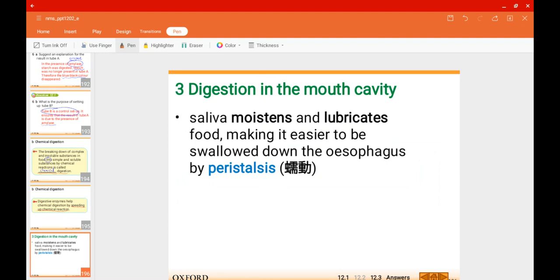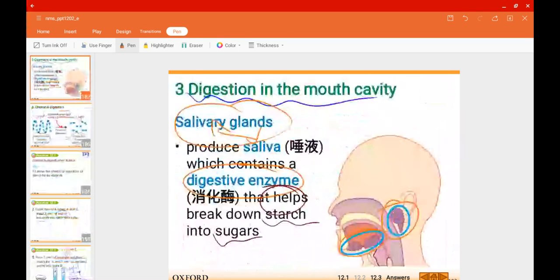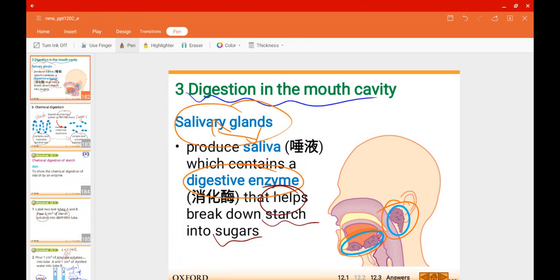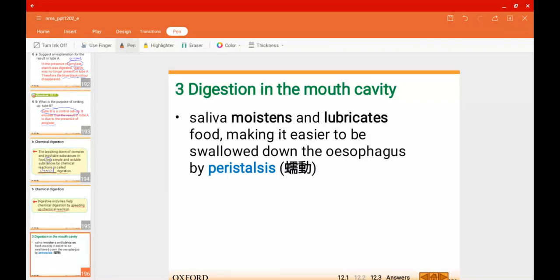Apart from saliva containing the digestive enzyme, saliva also moistens and lubricates the food, which makes it easier to be swallowed down by the esophagus by a process called peristalsis. What exactly is peristalsis?